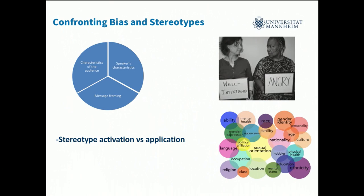From the literature on confronting discrimination and bias, message transportation depends on three things: the characteristics of the audience, the characteristics of the speakers, and the message framing. In our experiment, we decided to manipulate the gender and race of the speaker, as well as the message framing — negative or problem framing versus a solution or positive framing.